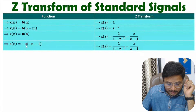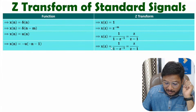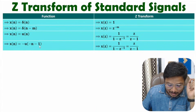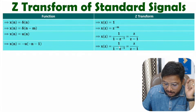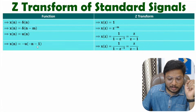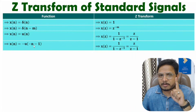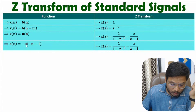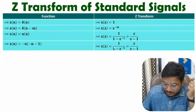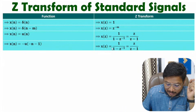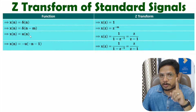If you talk about the left-sided unit step signal, that is minus of U(−n−1), it has the same Z-transform: 1 divided by (1 minus Z⁻¹). You need to be careful here. I have seen students making mistakes in competitive examinations. If they ask you to find the Z-transform of U(−n−1) alone, that is 1 divided by (Z⁻¹ minus 1), or equivalently Z divided by (1 minus Z). But minus of U(−n−1) has the same Z-transform as U(n).